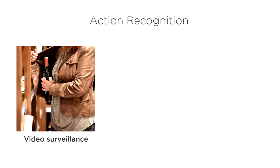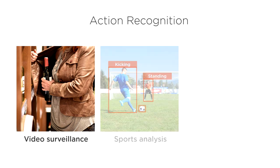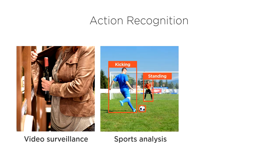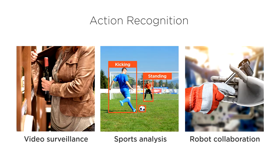Action recognition is useful anytime you need to detect what's happening in a video. For example, detecting unlawful activities in a surveillance video, analyzing activities occurring in sports videos, and collaboration between humans and robots.